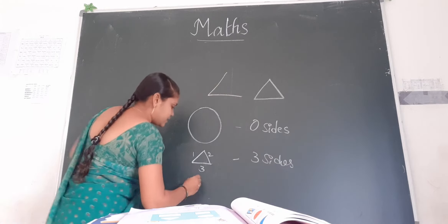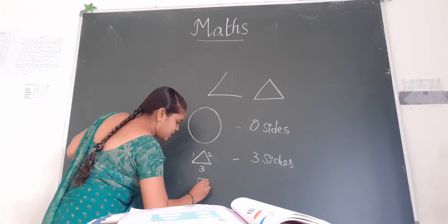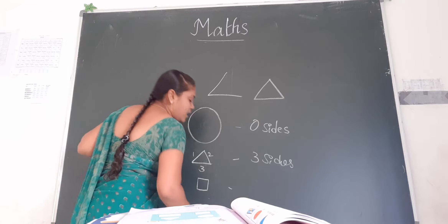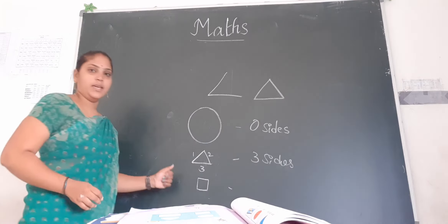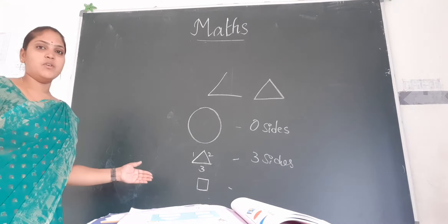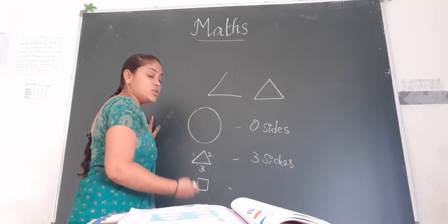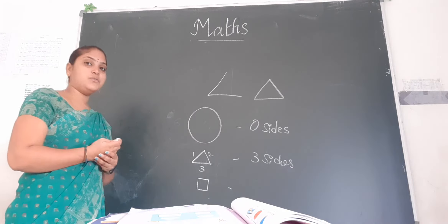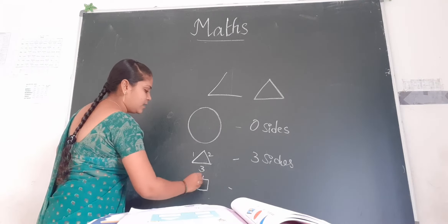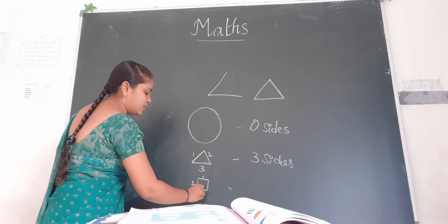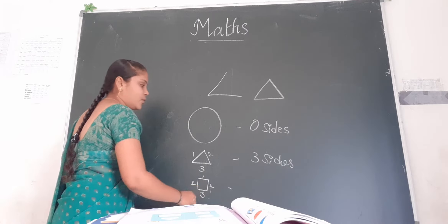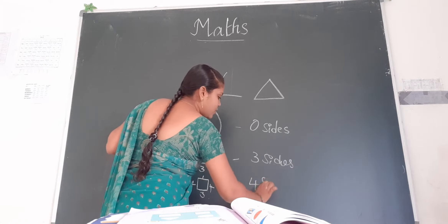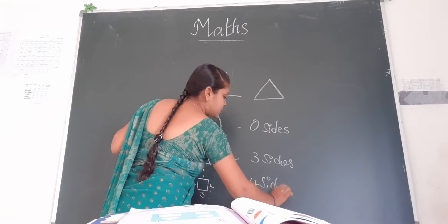Next. What is the name of this shape? It is a square. So how many sides does a square have children? One, two, three, four. Square has four sides.